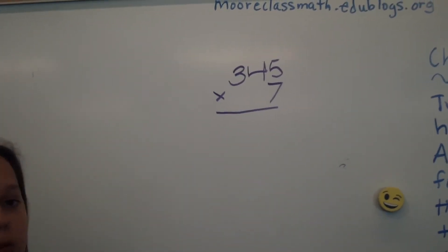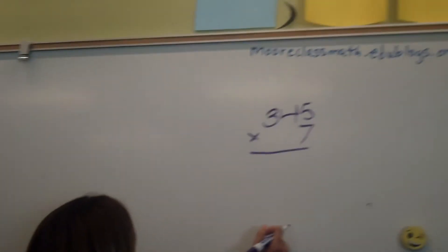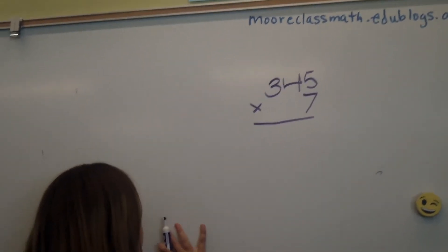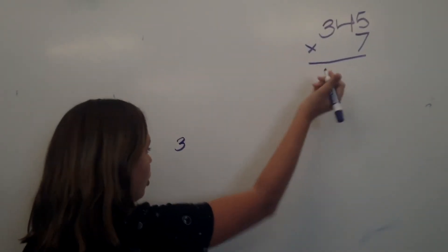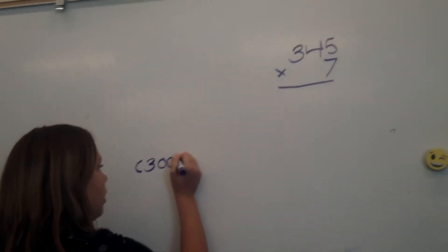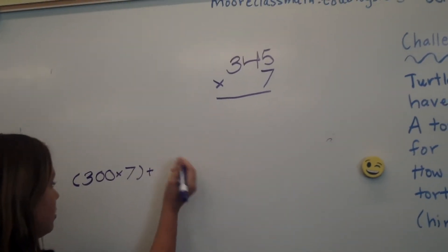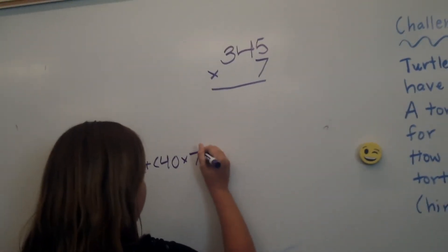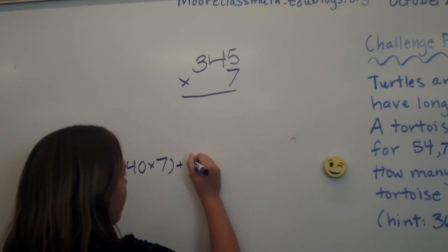So I will be teaching you distributive property. Today, I will be multiplying 345 times 7. So with the distributive property, you're just breaking up the largest number. So it would be 300 times 7, plus 40 times 7, plus 5 times 7.